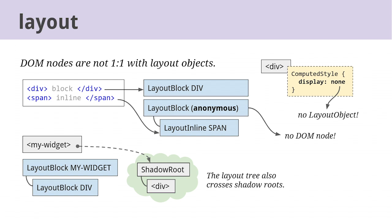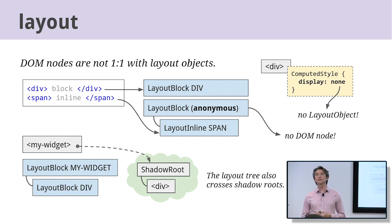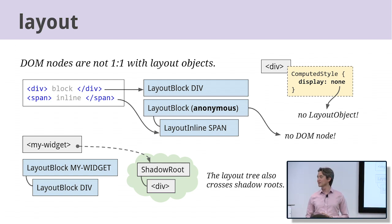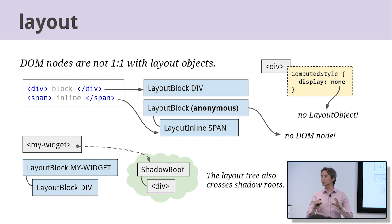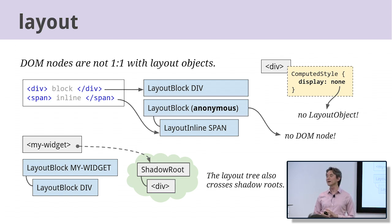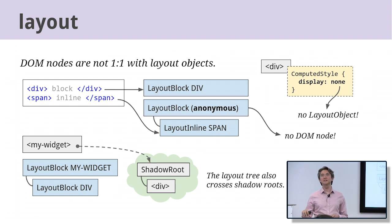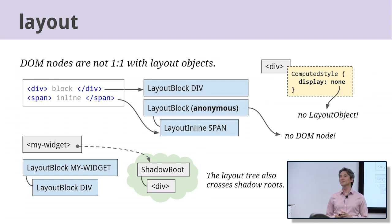DOM nodes and layout objects are roughly one-to-one, but there are notable exceptions. If you set display:none on a node, it does not create a layout object because we're not going to render it and it occupies no space in the content area. Sometimes you can have a layout object without a node — for example, LayoutBlock and LayoutInline are not allowed to be siblings, so if inline and block DOM elements are siblings, we create an anonymous layout block to wrap the LayoutInline. It's even possible for a node to have more than one layout object. The layout tree is based on flat tree traversal, which includes all shadow roots, so a layout object might even be in a different DOM tree from its layout container.